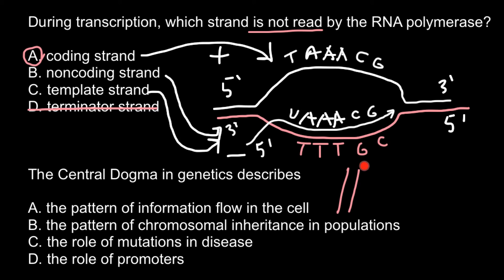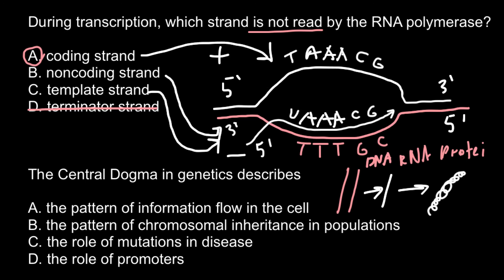Imagine this is double-stranded DNA. One of the strands would be used as a template to make messenger RNA — this is the first step in protein production. The next step: this messenger RNA would be used to build a protein sequence. This flow of information from DNA to RNA to protein is what we call the central dogma in genetics.